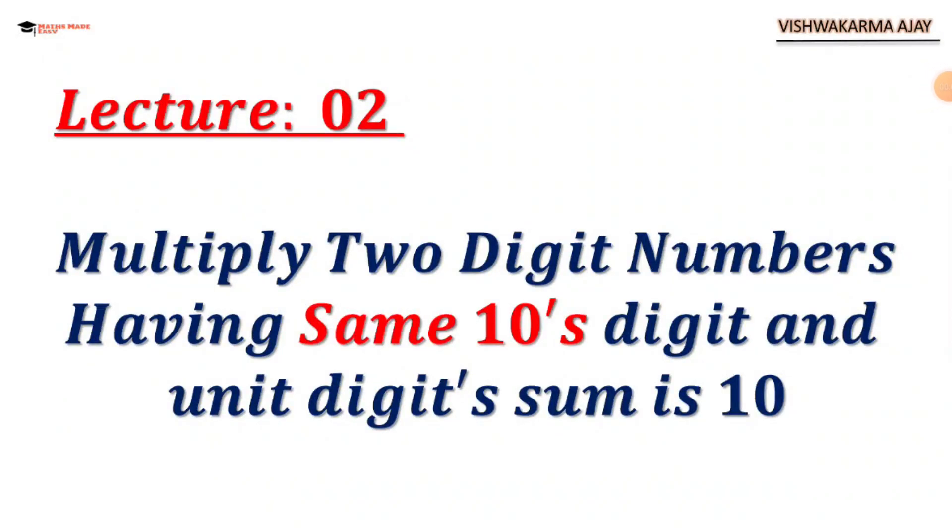Welcome to Maths Made Easy. Today we are going to see another trick for fast calculation: multiply two-digit numbers having the same tens digit and unit digits sum is 10. Let's get started.